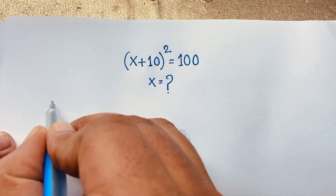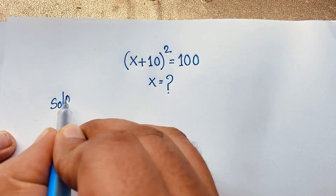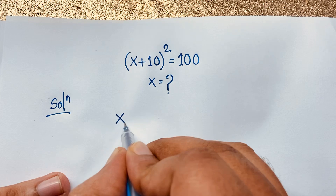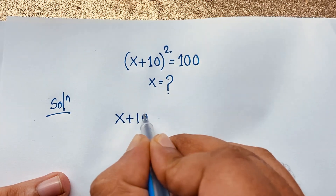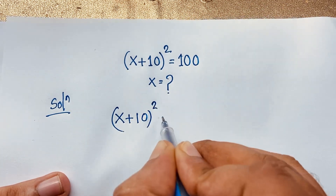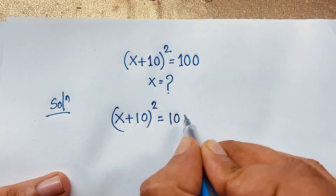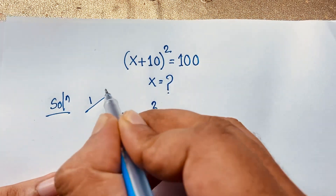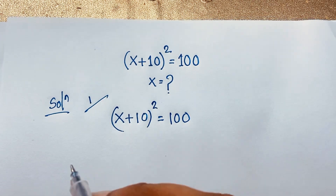So our math solution — our question is (x + 10)² = 100. I solved this question using 3 methods. This is our first method.